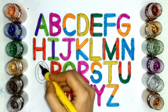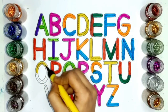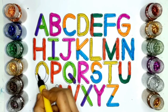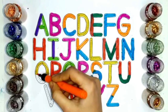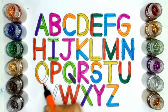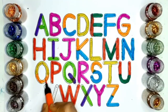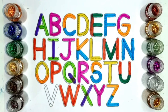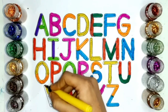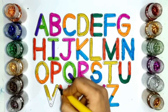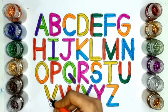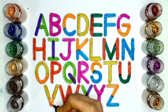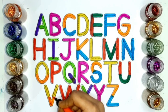Letter O. Yellow color. O for orange. Orange color. Letter V. V for violin.